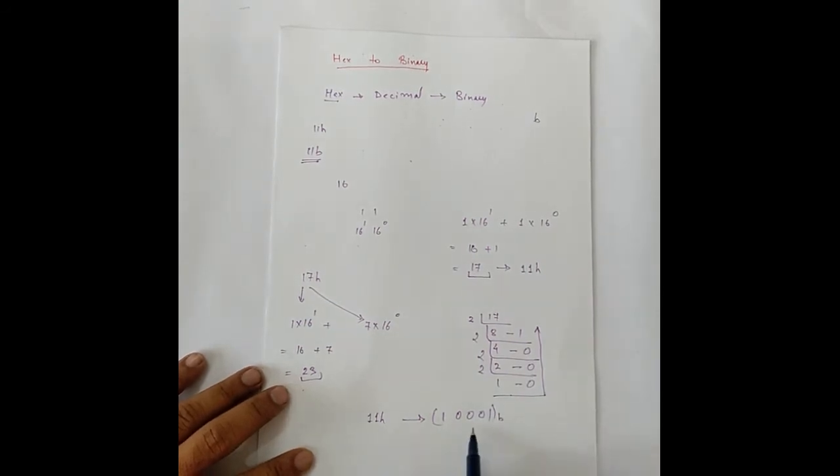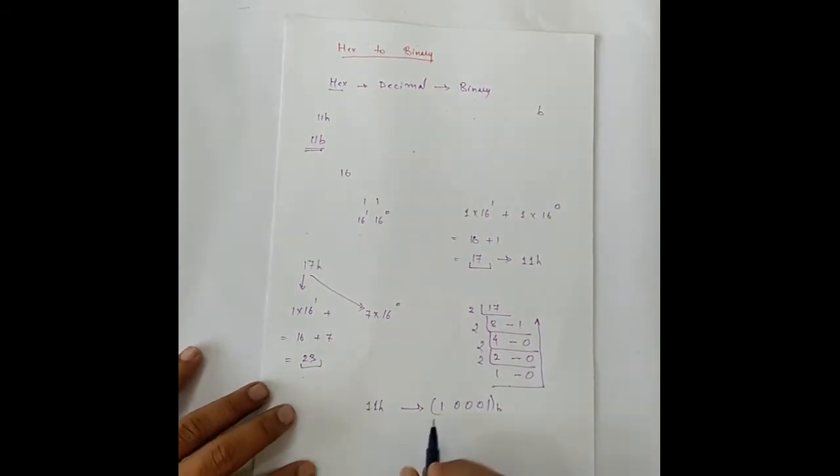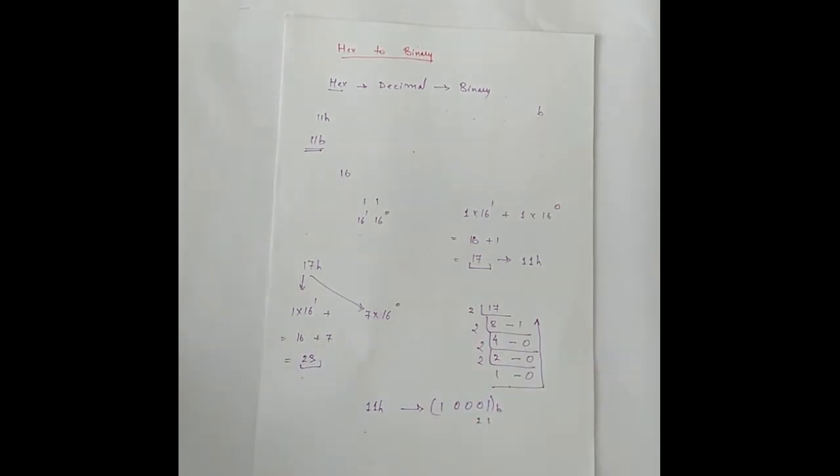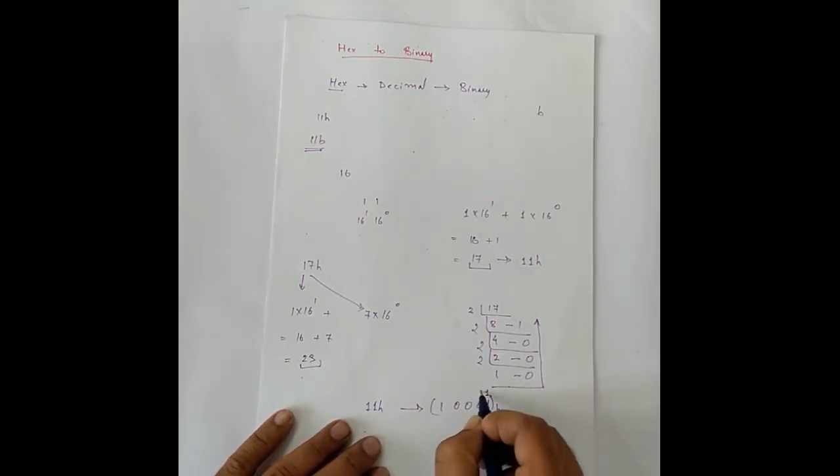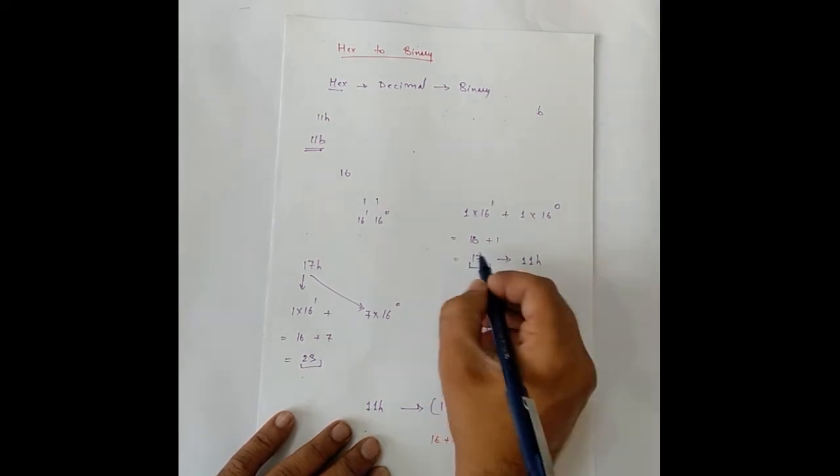So, if we convert this to decimal now. Let's see. This is 1, 2, let's take another color here. 1, 2, 4, 8, 16. So, wherever we have 1, we take those numbers and add them. So, we take 16 plus 1 equals to 17. This is the value which we had got here.